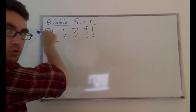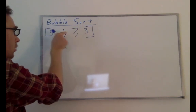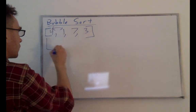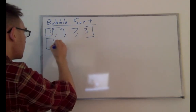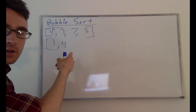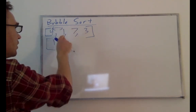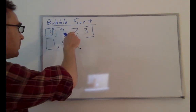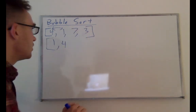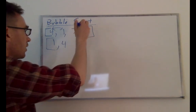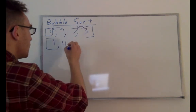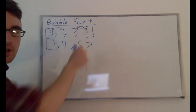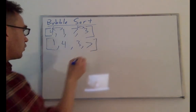We start with our first pass through the array and we get to the first two numbers, four and one. We see that these are not in the right order, so we're going to swap these. At this point the array looks like this because we've swapped the one and the four. The next pair is four and seven — these are in the correct order because four is less than seven. But then seven and three — these are in the wrong order because seven is greater than three. So we're going to also swap those. Now the array has swapped the one and four, and also swapped the three and the seven.